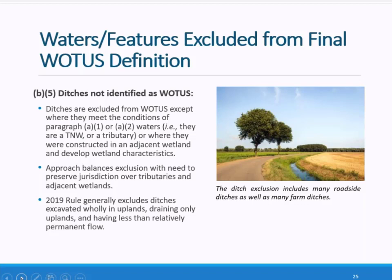Earlier in the presentation, Mindy spoke about ditches that are jurisdictional under the final rule. Here, the agencies are clearly articulating those ditches that are not jurisdictional — meaning those that are not traditional navigable waters or tributaries, or do not meet the conditions of adjacent wetlands in certain circumstances. Types of ditches that are excluded under the final rule are those dug in uplands regardless of flow classification, that form water distribution systems, roadside ditches, many agricultural ditches, and others that are part of industrial activities. Ditches constructed in features with ephemeral flow are also excluded.